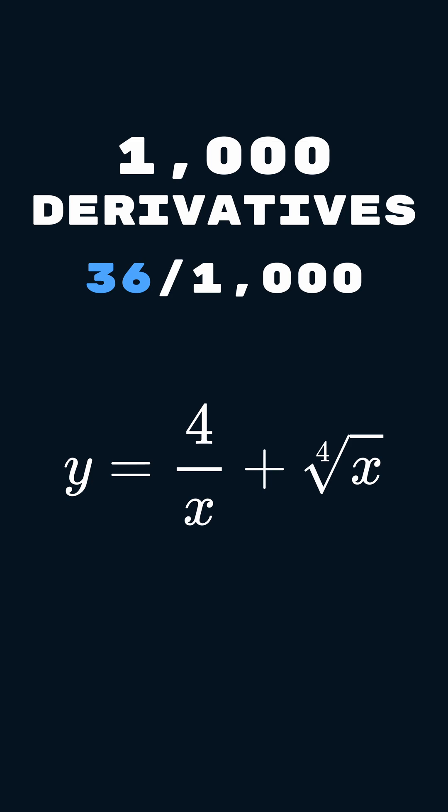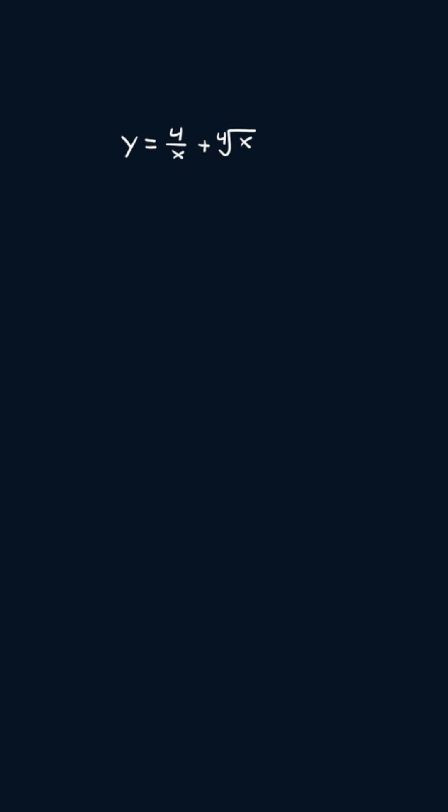This is day 36 of doing 1000 derivatives, one every single day. Today's derivative is y equals four over x plus the fourth root of x.